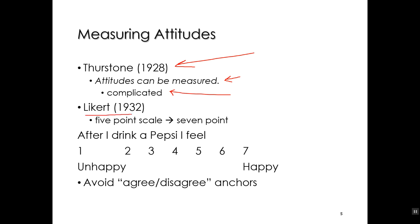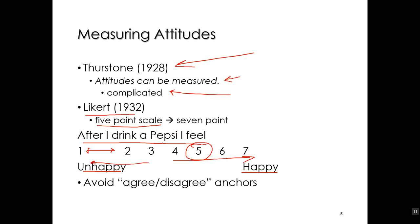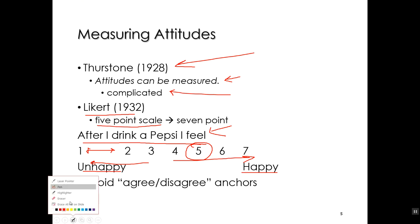It was only in the 1930s that Likert developed a five-point scale for measuring attitudes. For example, 'After I drink a Pepsi, I feel...' — with an anchor point at each end — and you would circle a number to indicate how you feel positively or negatively about drinking a Pepsi. This has become an extremely popular method of measuring attitudes, and you've probably seen these several times a day.